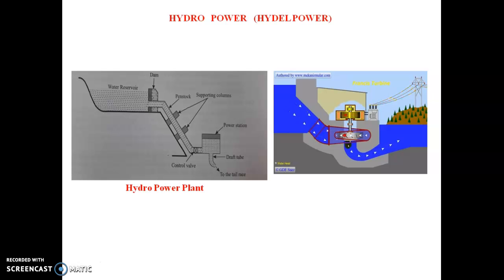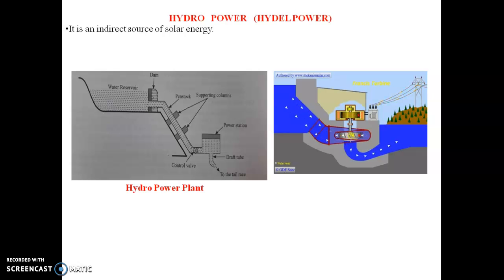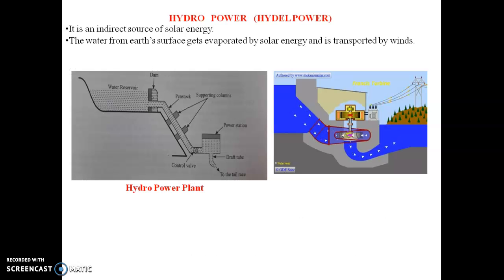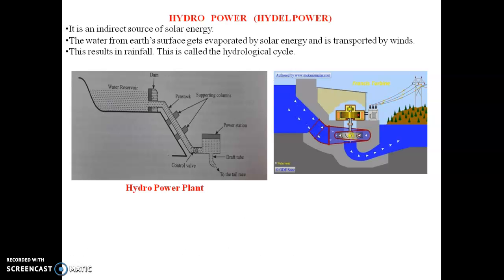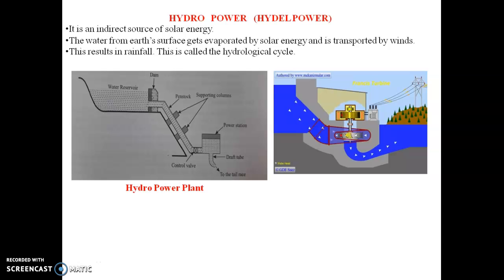The hydropower plant is an indirect source of solar energy because water from the earth's surface gets evaporated by solar energy, is transported by wind, and results in rainfall. This is called the hydrological cycle. Now let us discuss the construction and working of a hydroelectricity power plant.